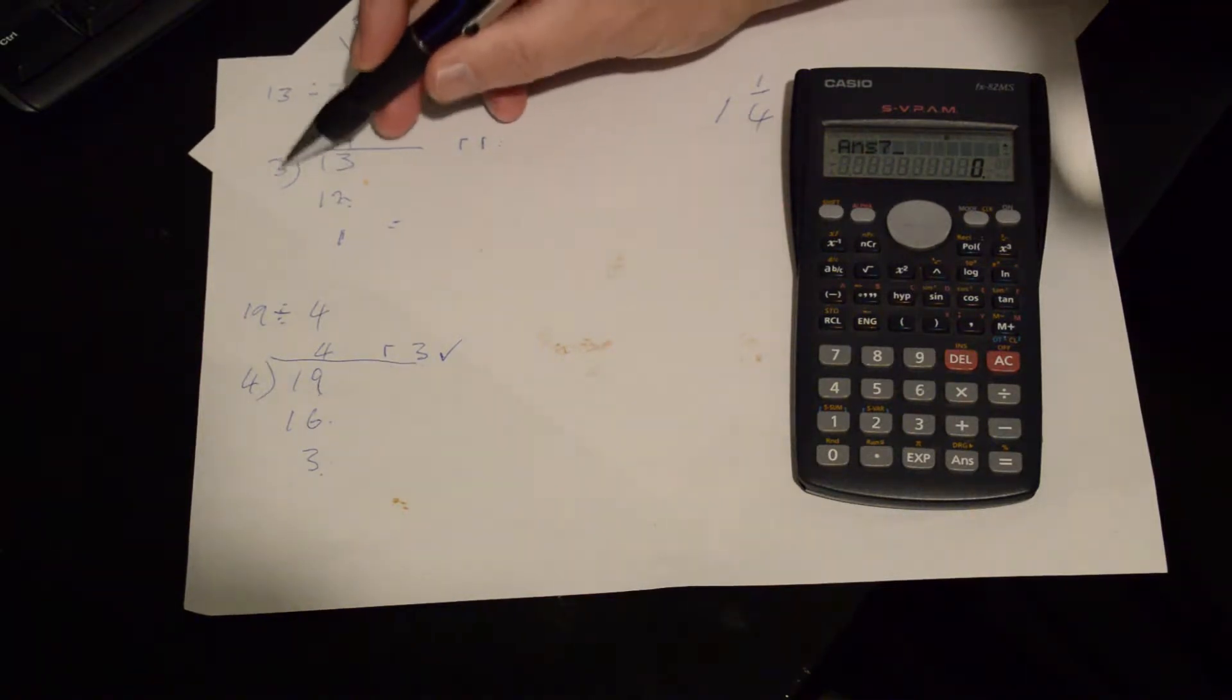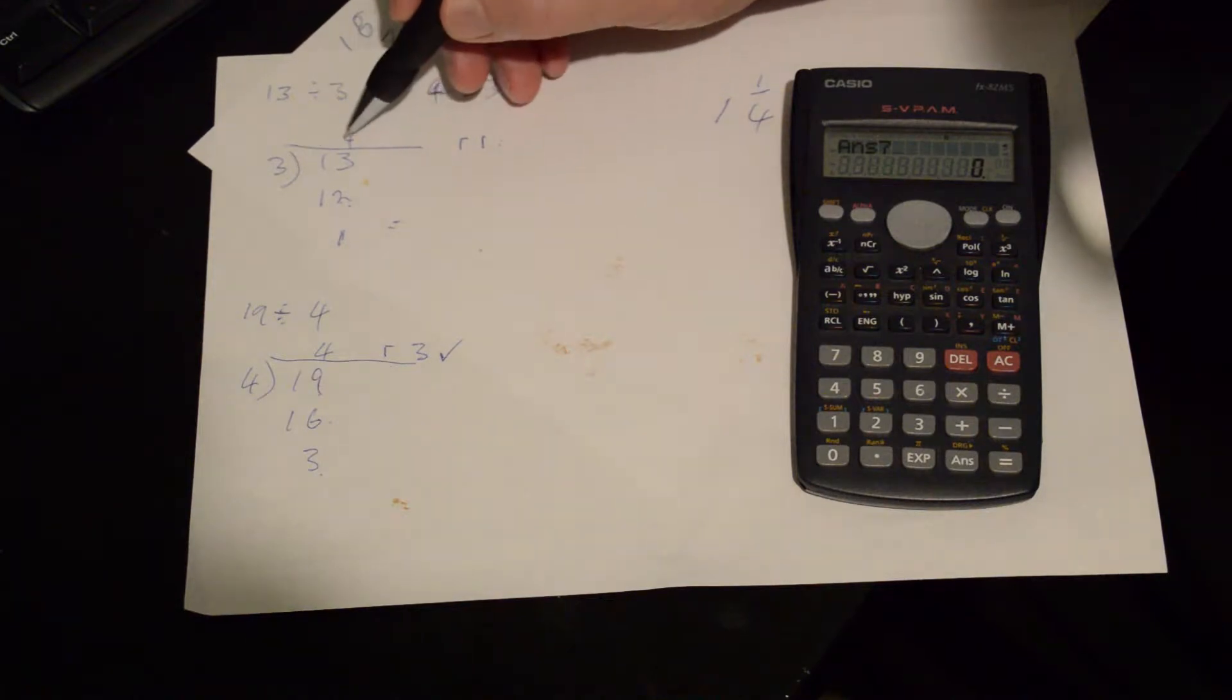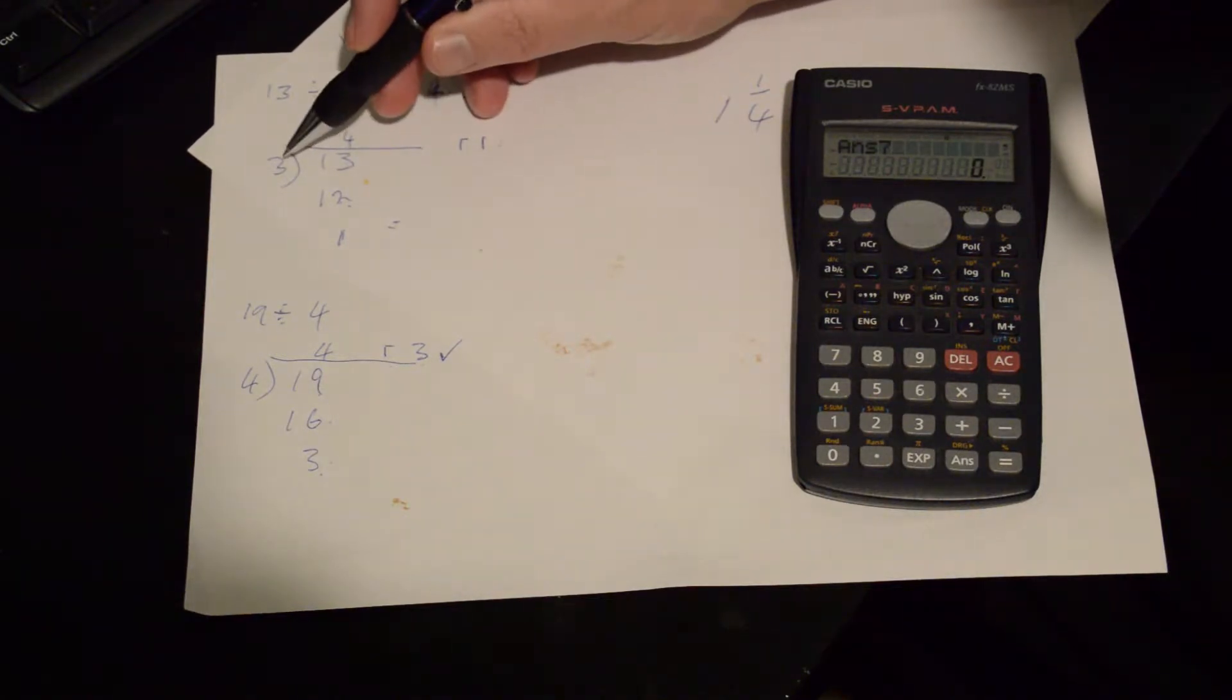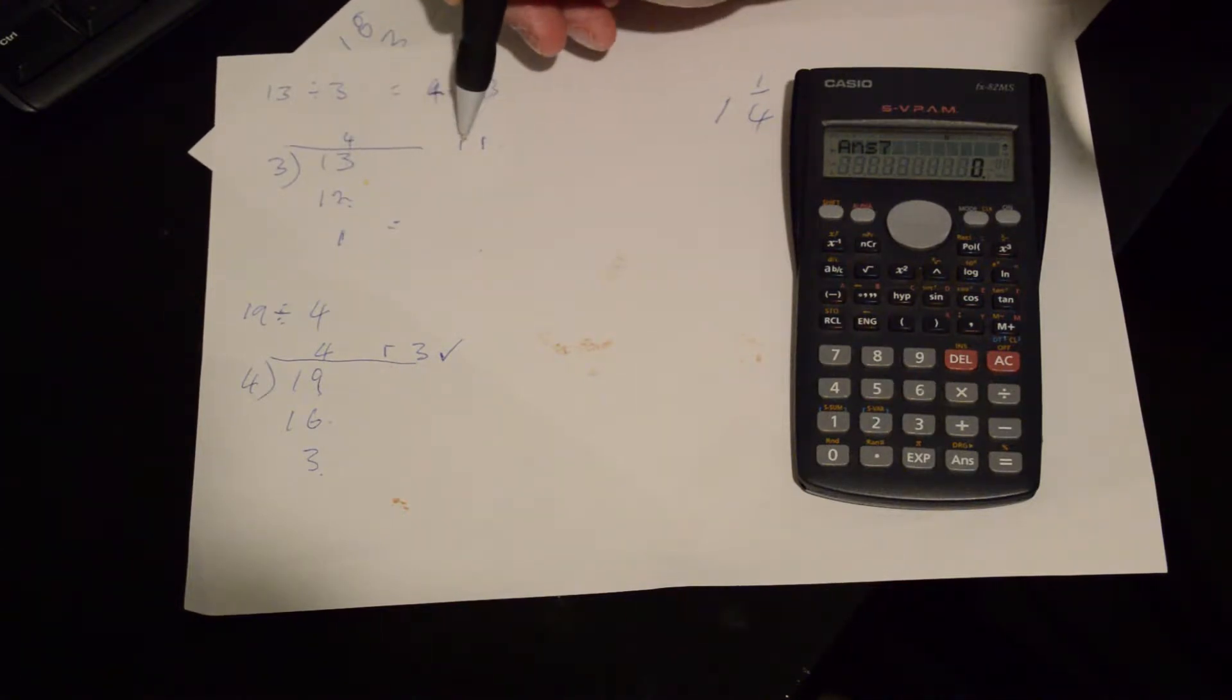we change that to 3 brackets 13. Now, 3, 4 times 3 is 12. So if we go 13 minus 12 we've got a remainder of 1.